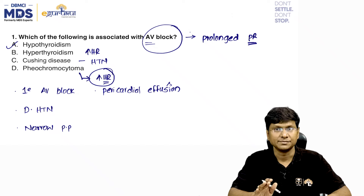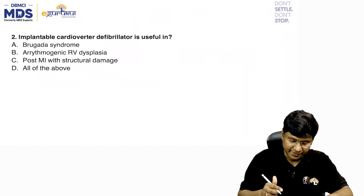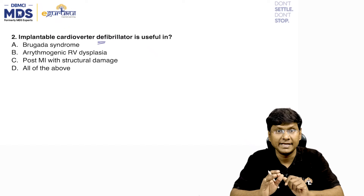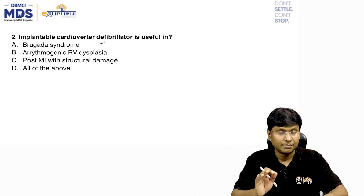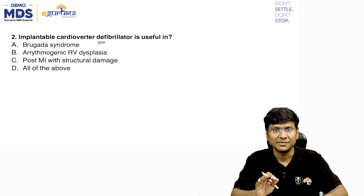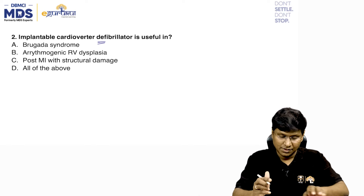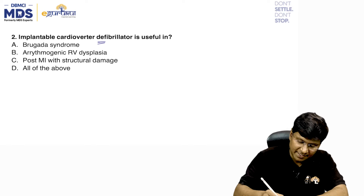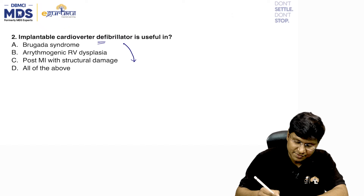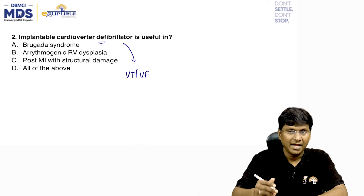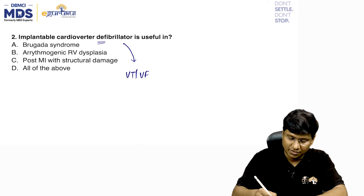The second question: implantable cardioverter defibrillator (ICD) is useful in which of the following? Options: Brugada syndrome, arrhythmogenic right ventricular dysplasia, post myocardial infarction with structural damage, or all of the above. The ICD is mainly used to treat sudden onset VT or VF, and because of this sudden onset VT or VF these patients can have sudden cardiac death.